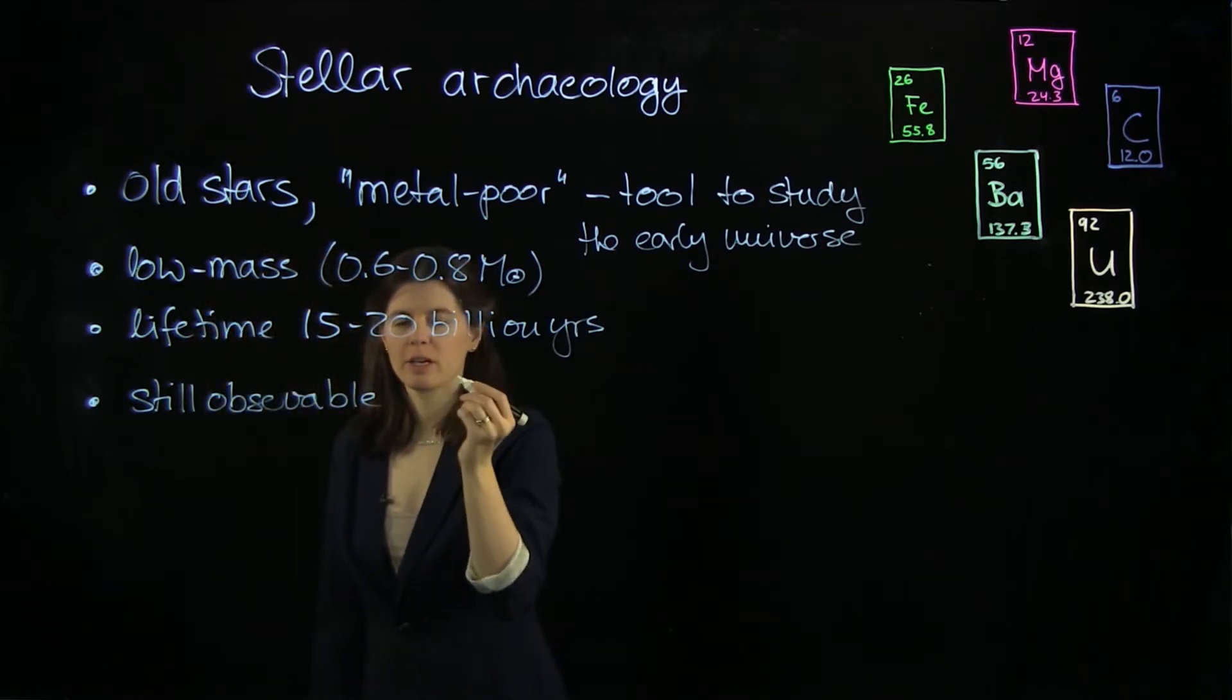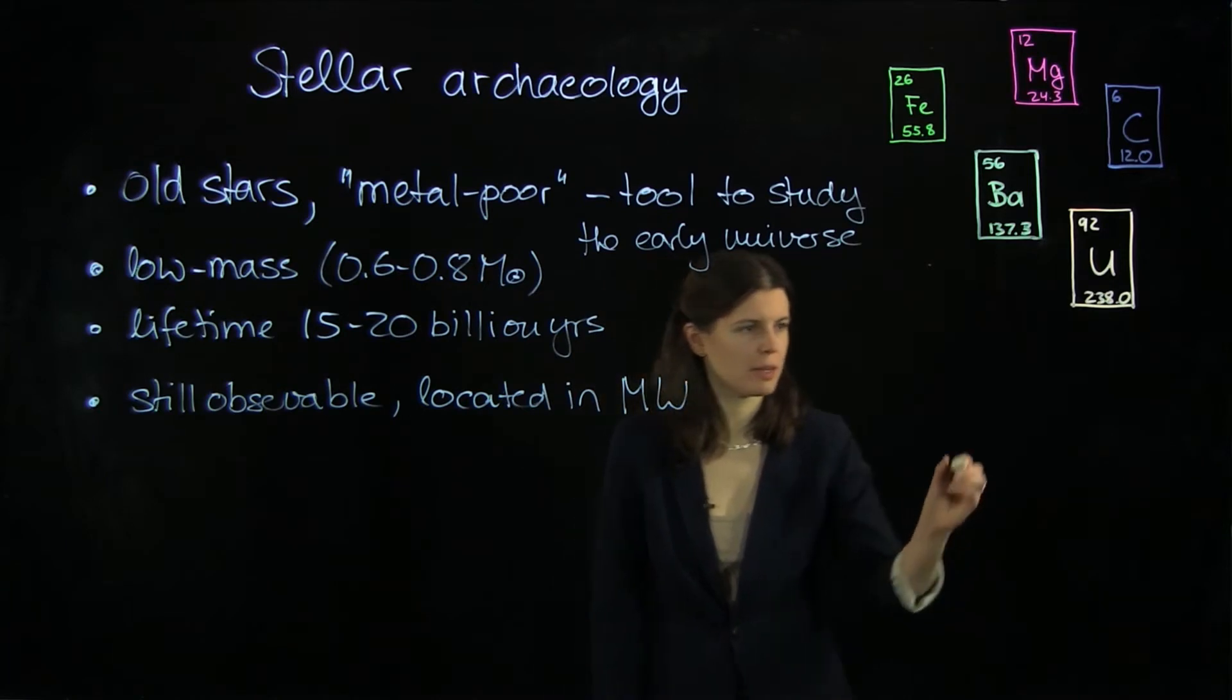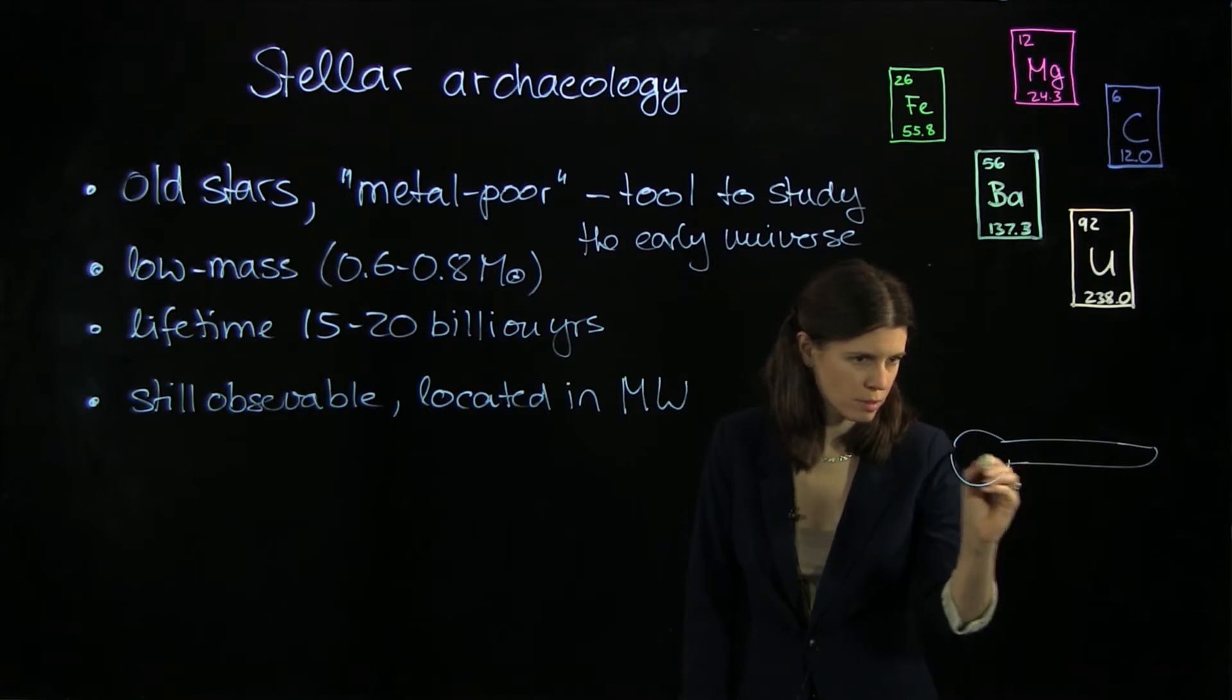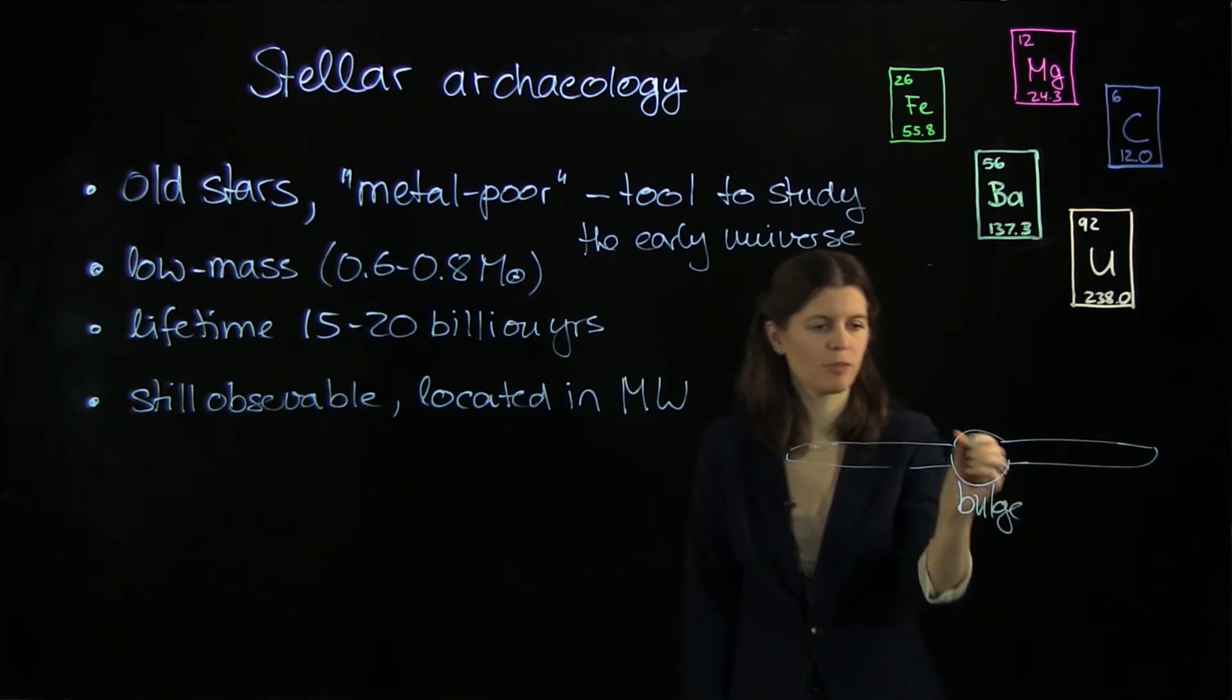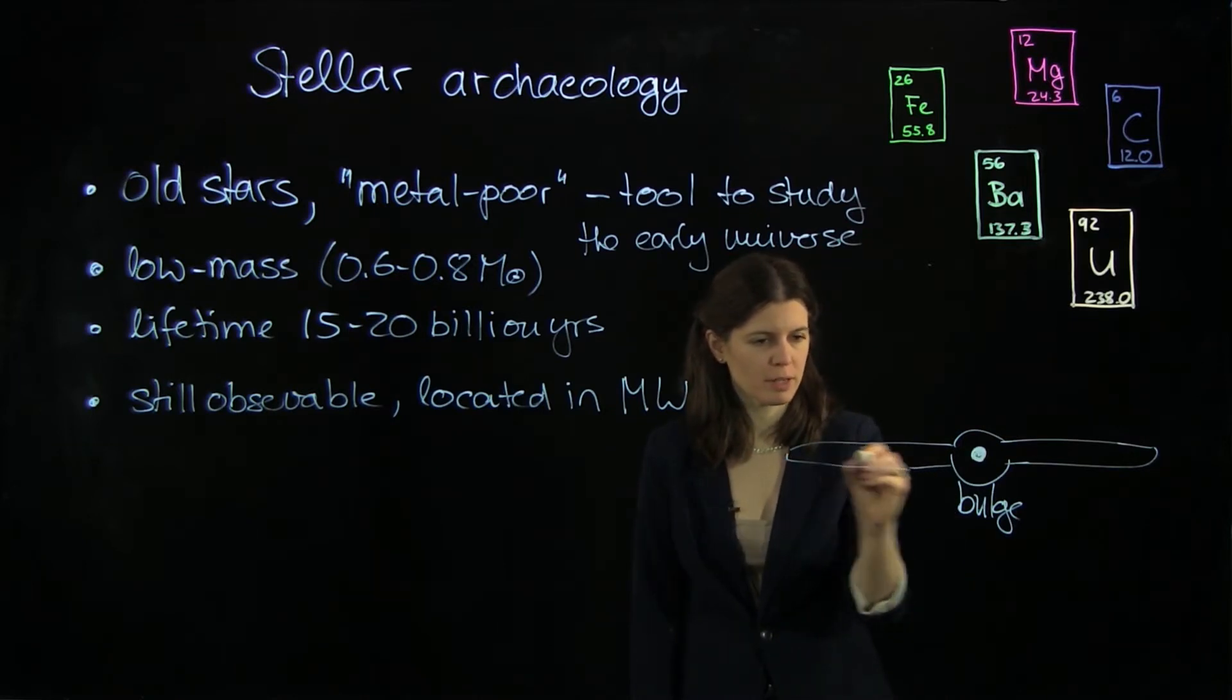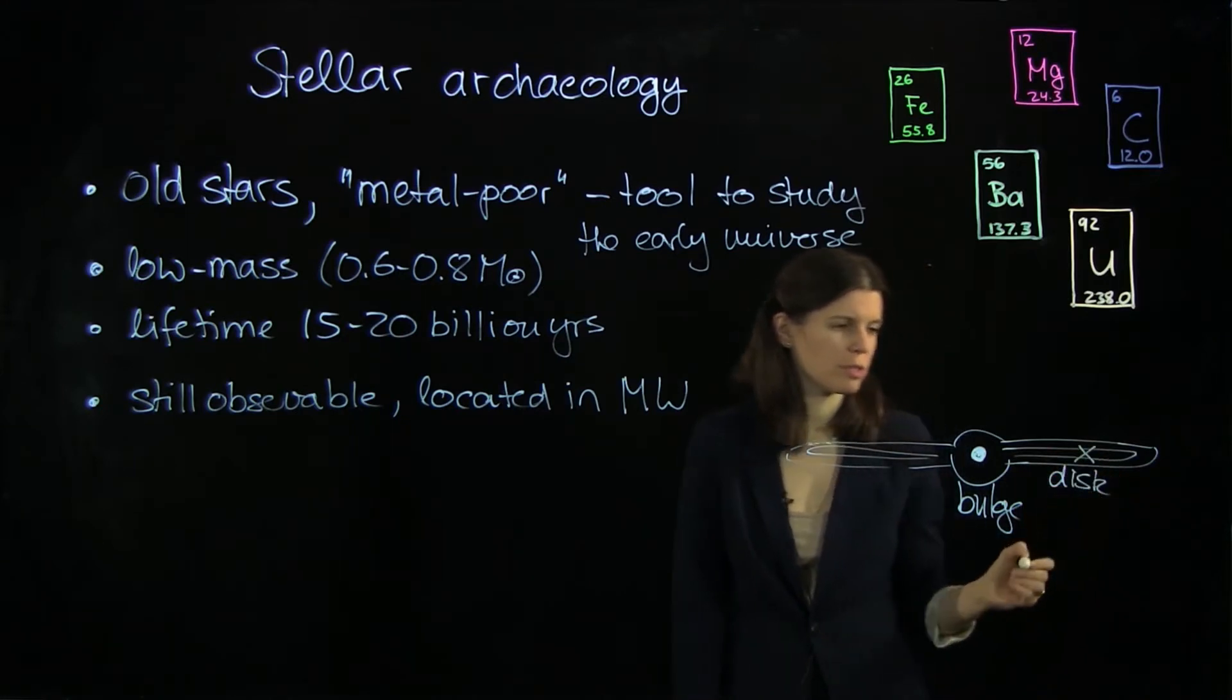They are not just observable, they are actually fairly easily observable because they are now located in the Milky Way. Let's look at this again. So this is a very quick drawing of our Milky Way. This is the bulge, the inner part of our galaxy with a supermassive black hole in the center. And this here, actually two disks, so this is the disk. And we are about here, two thirds on the way out.